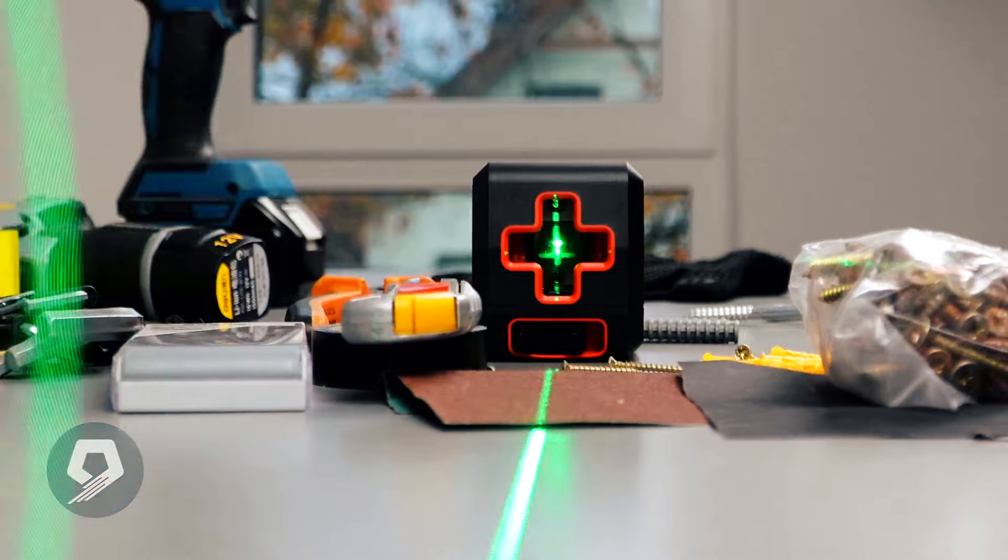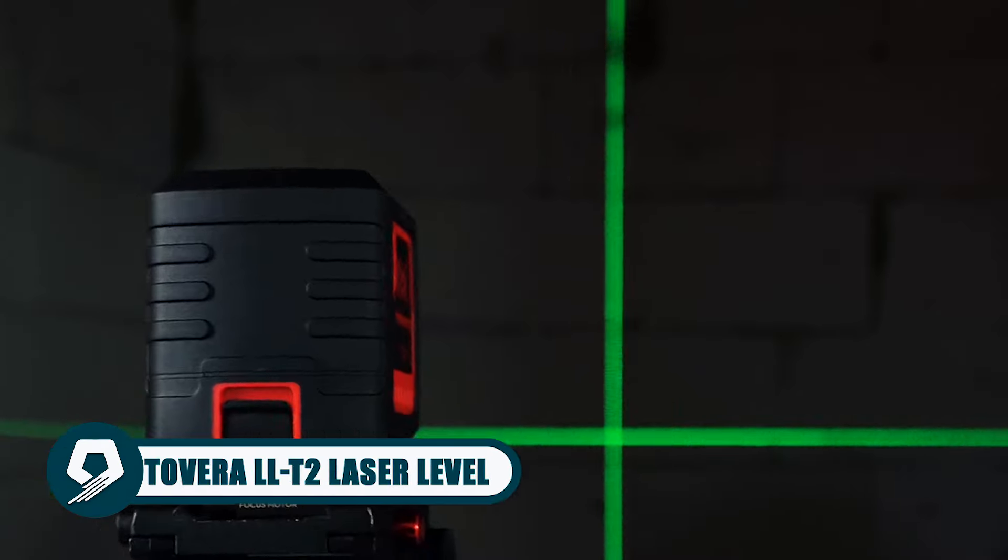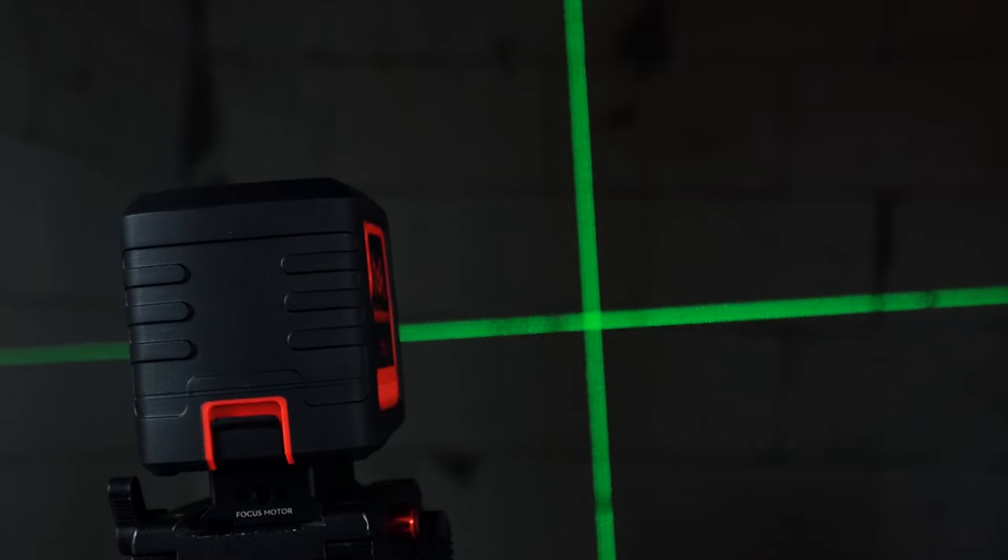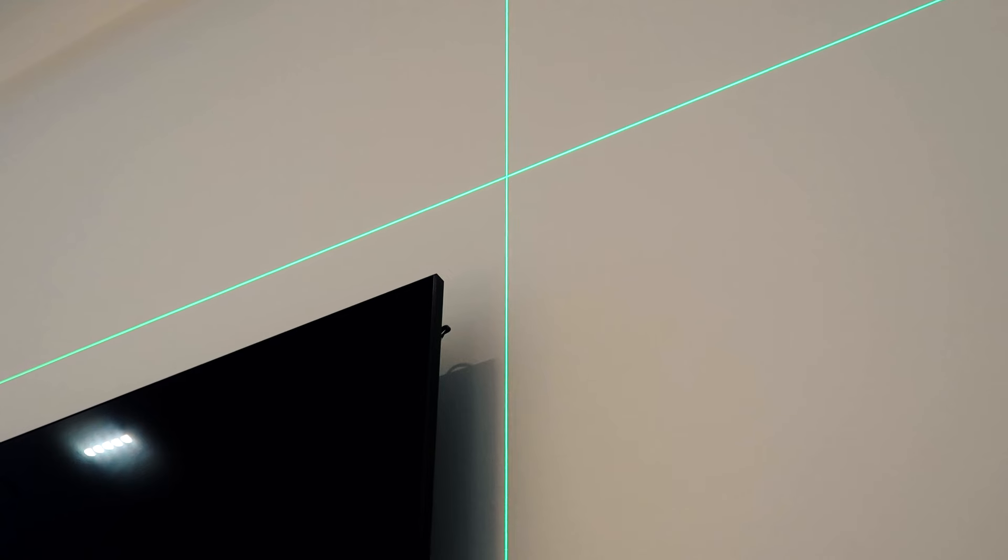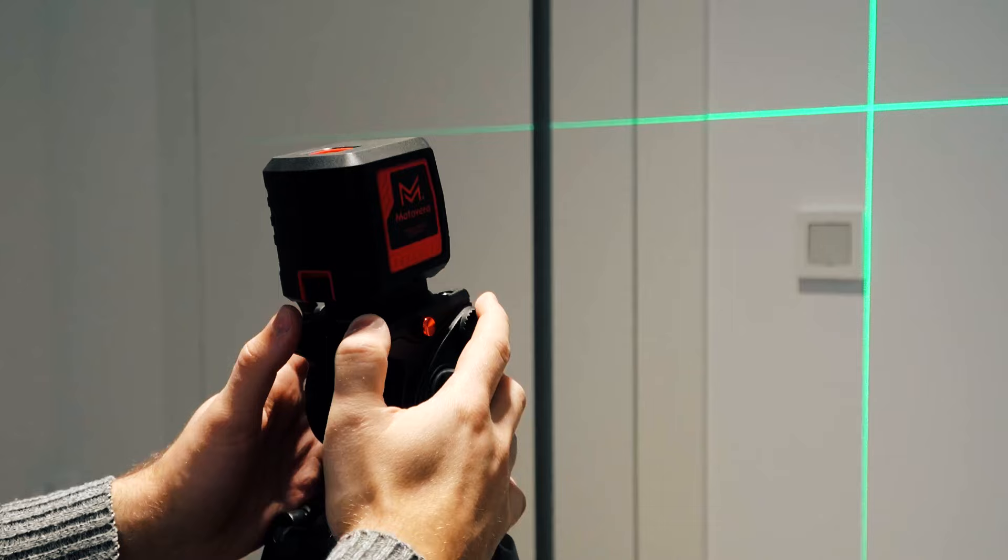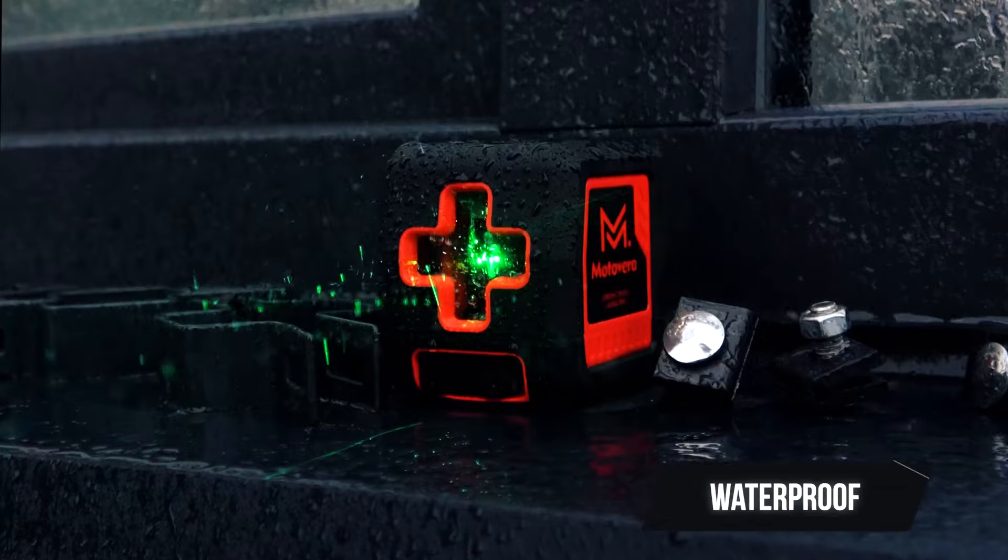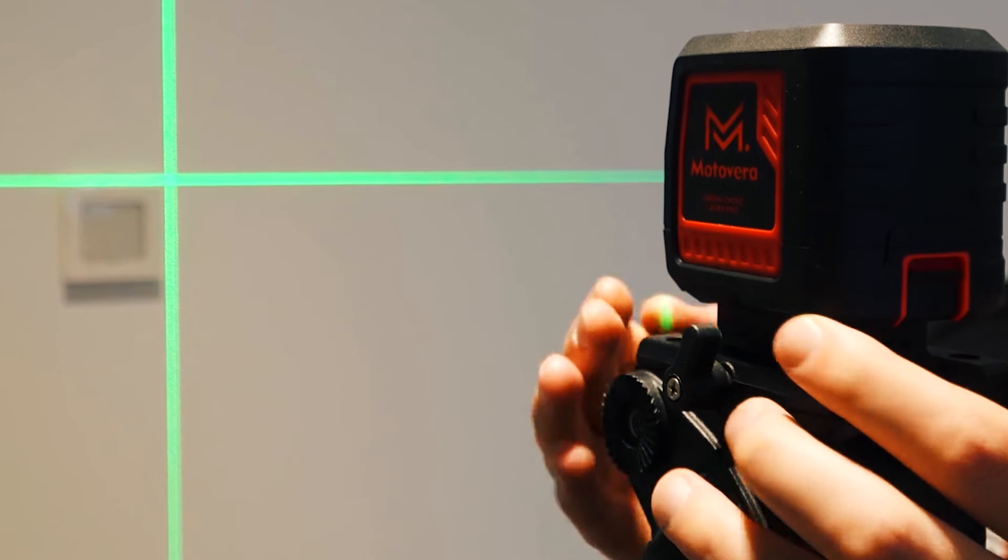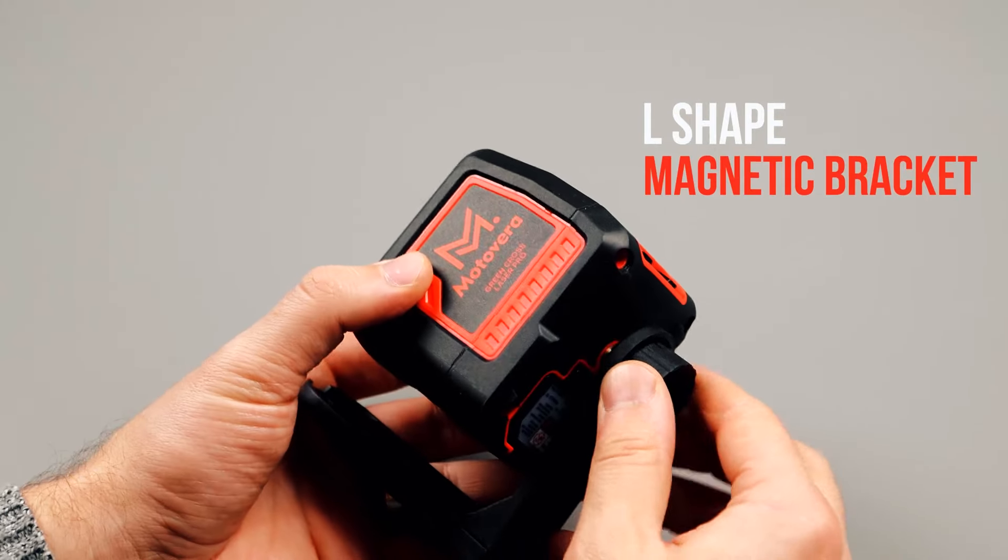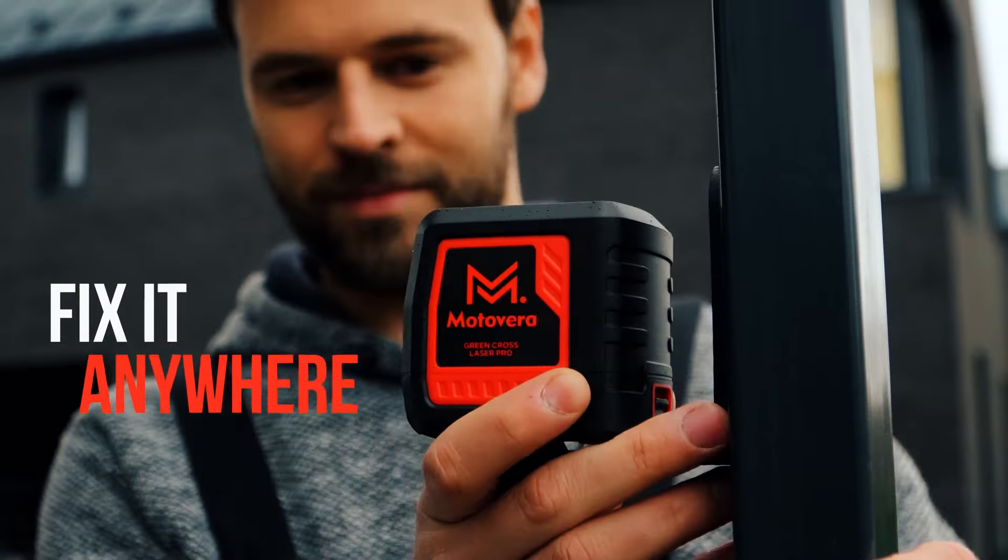Experience heightened precision with the Motavra LLT2 Laser Level, a compact powerhouse designed for precise measurements. With a 100 feet green cross-line projection, this self-leveling tool offers a soft grip, lightweight design, and IP54 dust and water resistance. The four-gear brightness adjustment adapts to various environments, ensuring optimal visibility. Equipped with a magnetic bracket and low battery indication, it combines convenience and functionality.